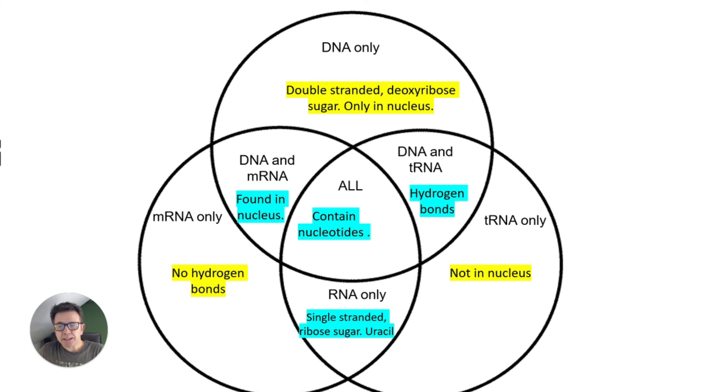mRNA only: no hydrogen bonds. tRNA only: not in the nucleus. DNA and mRNA are both found in the nucleus, whereas DNA and tRNA both contain hydrogen bonds. RNA only is single-stranded ribose sugar uracil. And all of them contain nucleotides.